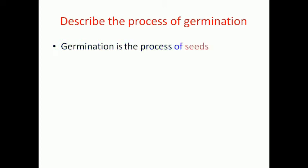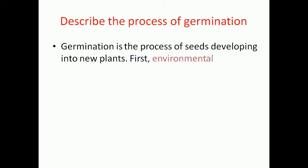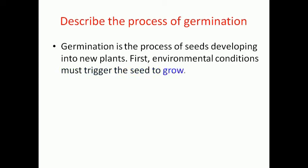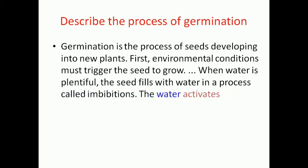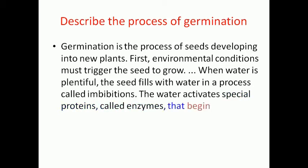Describe the process of germination. Germination is the process of seeds developing into new plants. First, environmental conditions must trigger the seed to grow. When water is plentiful, the seed fills with water in a process called imbibition. The water activates special proteins called enzymes, which begin the process of seed growth.